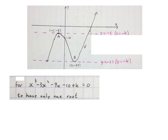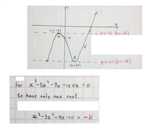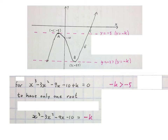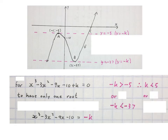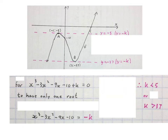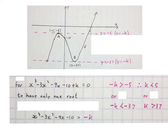The second part of the question: what is the value or values of k for this equation to have only one distinct root? We take k to the other side to get f of x equal to minus k — the two dotted lines shown. For these maroon lines to only cut the black graph once, the line must move above minus 5 or below minus 37. So either minus k is bigger than minus 5, which gives k smaller than 5, or minus k is smaller than minus 37, which gives k bigger than 37. Final answer: k is smaller than 5 or k is bigger than 37.